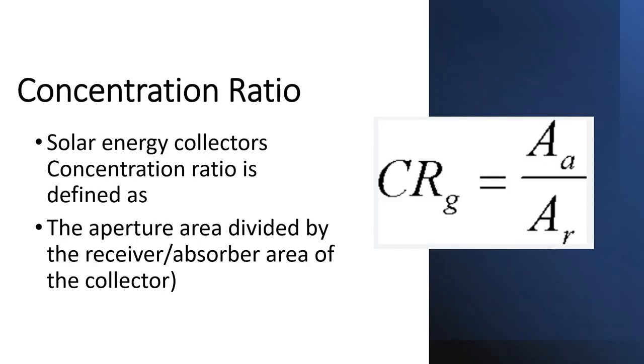Solar energy collector's concentration ratio is defined as the aperture area divided by the receiver or absorber area of the collector.